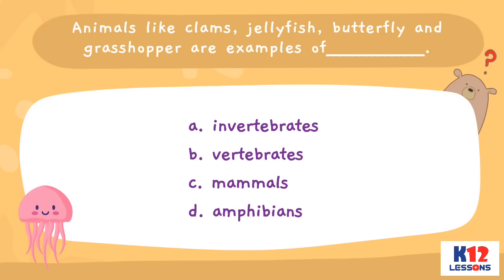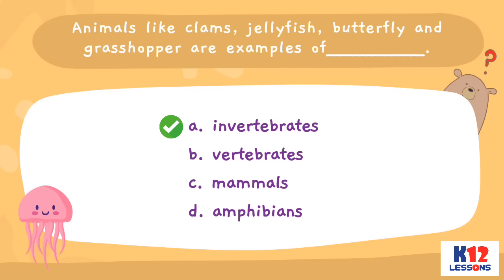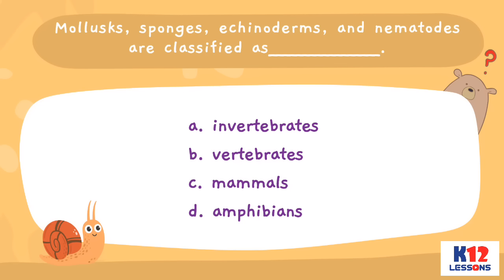Animals like clams, jellyfish, butterfly, and grasshopper are examples of: A. Invertebrates. B. Vertebrates. C. Mammals. D. Amphibians. Molluscs, sponges, echinoderms, and nematodes are classified as: A. Invertebrates. B. Vertebrates. C. Mammals. D. Amphibians.